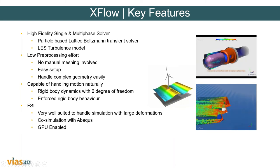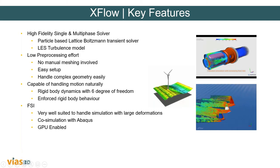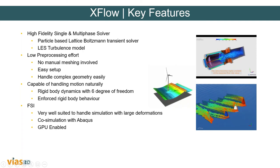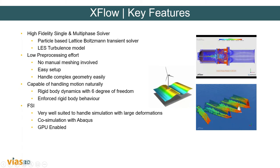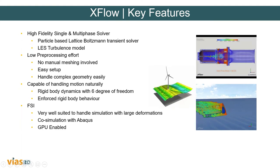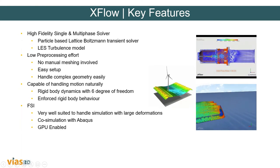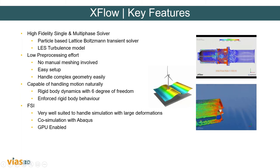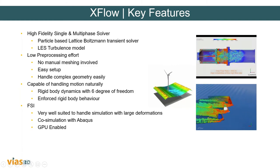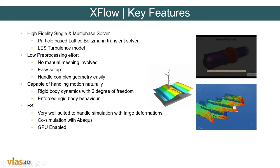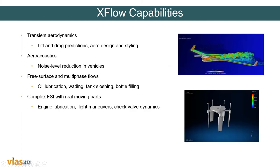XFlow is capable of naturally handling motions. There are two types of moving geometry: rigid body dynamics with three degrees of freedom, and enforced rigid body behavior where specific trajectories and paths are assigned to the body. These can be handled in a couple of clicks. XFlow also has fluid-structure interaction capabilities including two-way coupling with Abaqus. There is also an option for co-simulation with Abaqus within XFlow, reducing computation time as well.